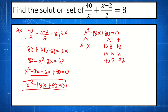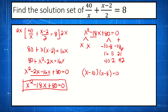When you add negative 10 and negative 8, that gives negative 18. Also, when you multiply negative 10 times negative 8, the product is 80. So the factored form of x squared minus 18x plus 80 is x minus 10 multiplied by x minus 8, equals 0. We apply the zero product property, setting each factor equal to 0.